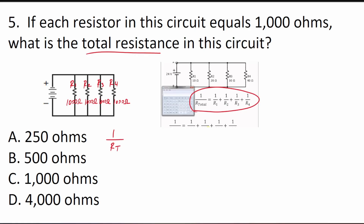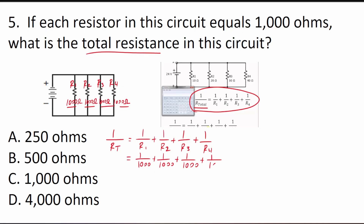Plugging in the values: 1/R_T = 1/1000 + 1/1000 + 1/1000 + 1/1000. Since all fractions have a common denominator of 1,000, we just add the numerators: 1 + 1 + 1 + 1 = 4. So 1/R_T = 4/1000.